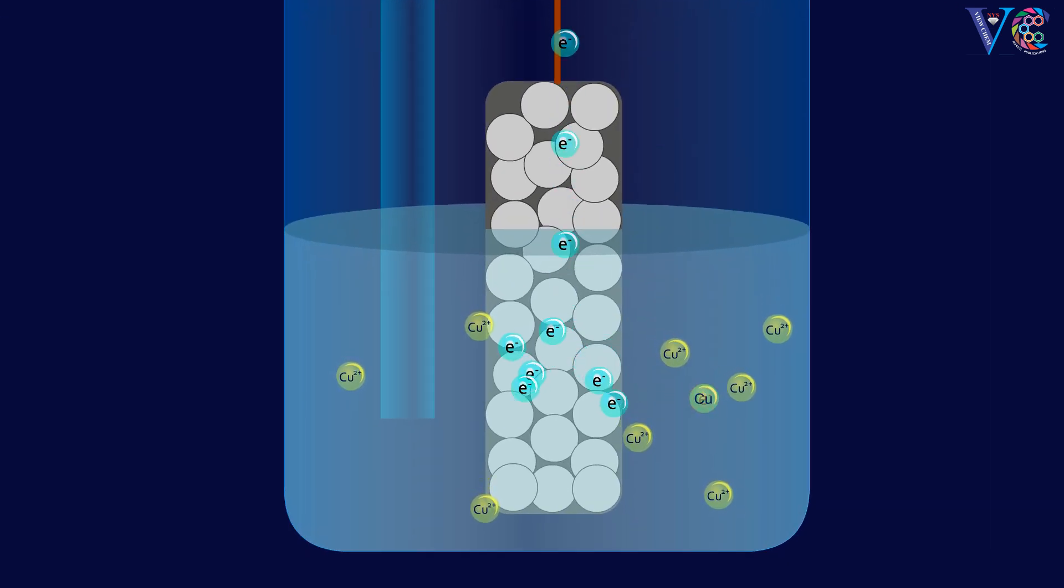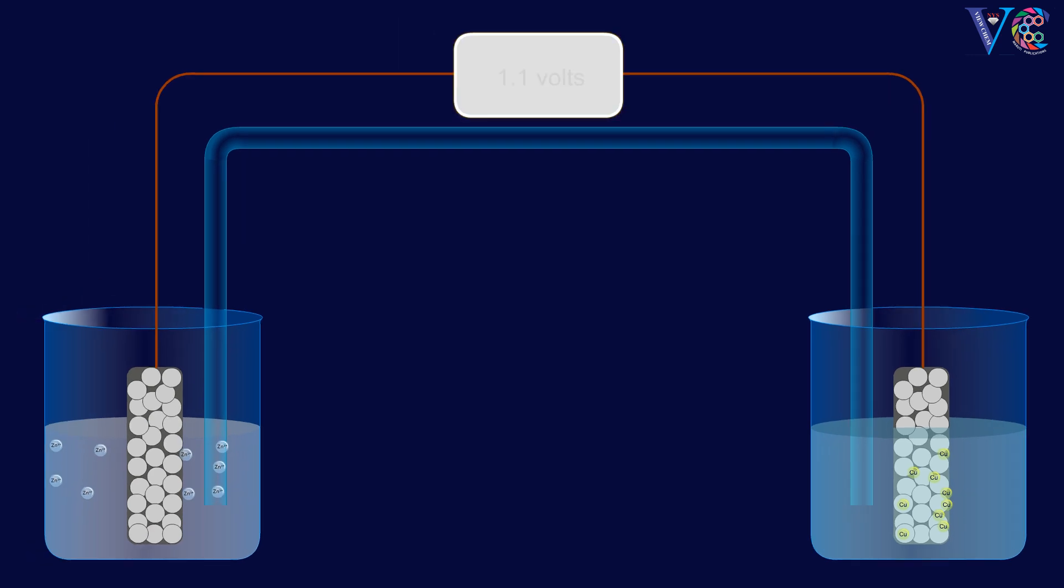At cathode, reduction of Cu-2-plus ions to copper takes place. Due to this process, the cell develops 1.1 volts.